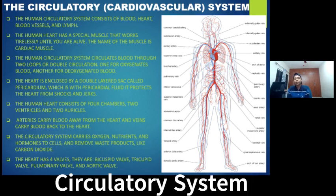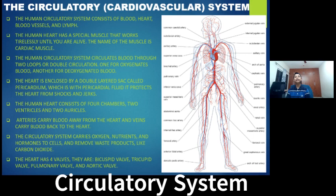The circulatory system carries not only oxygen, because the body does not only require oxygen — it requires nutrients, hormones, and cells. So blood is like the transporting machine for our body. Blood carries oxygen, nutrients, cells, and hormones.